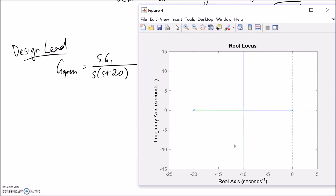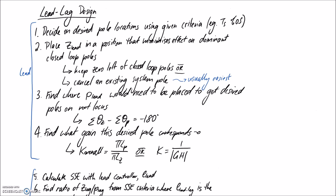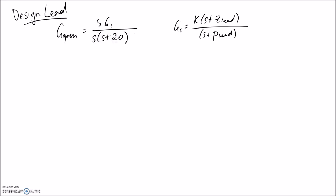The desired poles were at negative 100 plus or minus 105, so they're way out here. We need to place our zero and pole such that the root locus passes through the desired poles. We can place the zero to cancel an existing system pole — this is usually the easiest option. We have poles at zero and negative 20, so I'm going to cancel the pole at negative 20 by placing the lead zero there, meaning Z_lead equals 20.